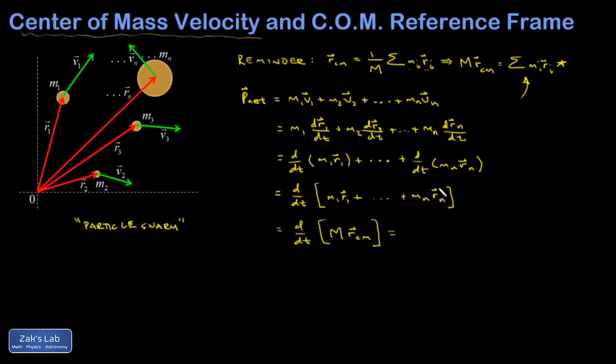But provided the total mass is constant, that can come out in front of the derivative. And I get total mass times the time derivative of the center of mass position. In other words, total mass times the velocity at which the center of mass of the system is moving. So I get this important new theorem. The net momentum of a distribution of particles is given by the total mass multiplied by the velocity of the center of mass.